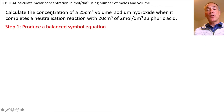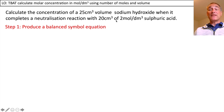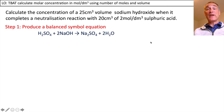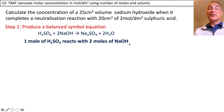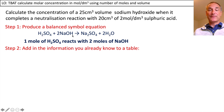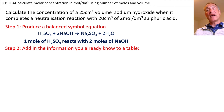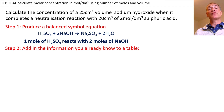We added 25 centimetres cubed of sodium hydroxide of unknown concentration to completely neutralise 20 centimetres cubed of 2 molar sulphuric acid. First we need a balanced equation for the reaction, which shows one mole of sulphuric acid reacts with two moles of sodium hydroxide. We can add this information to a table to work out the process, though in the exam you won't have the table in front of you.